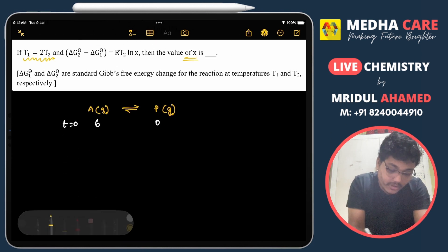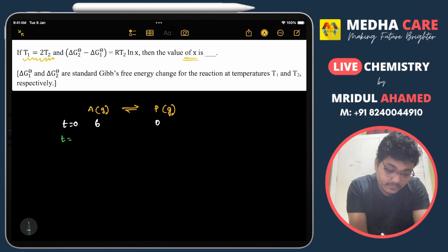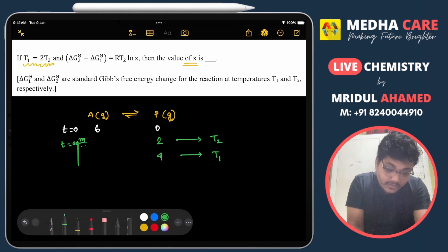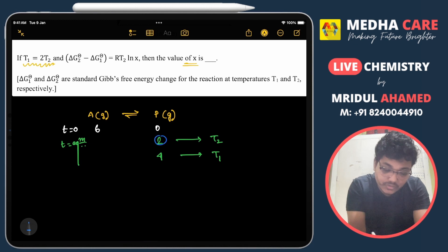If you consider the equilibrium condition, at T2 temperature the product is 2, and at T1 temperature it is 4. So in this situation, if the product is 2 then the reactant left will be 4, and if the product is 4 then the reactant will be 2.